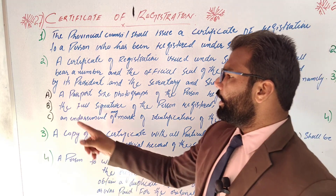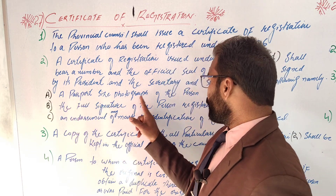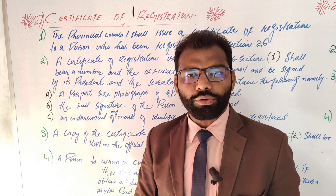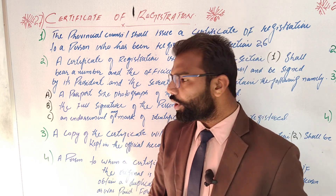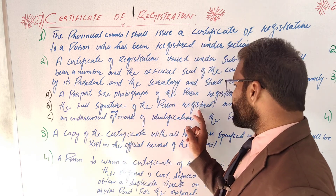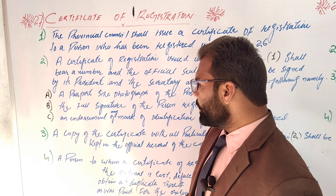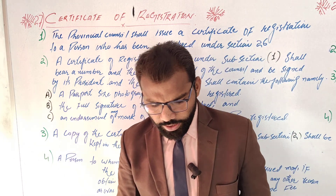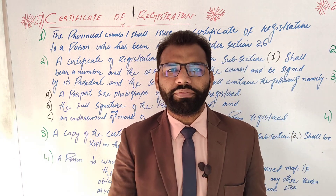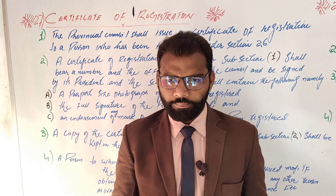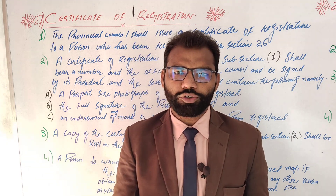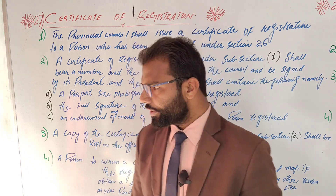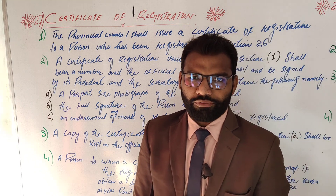The certificate shall contain the following: (A) a passport size photograph of the person registered, (B) a full signature of the person registered, and (C) endorsement of any mark of identification of the person registered. The mark of identification is placed on the certificate, though sometimes it can be changed depending upon the policies of the provincial council.